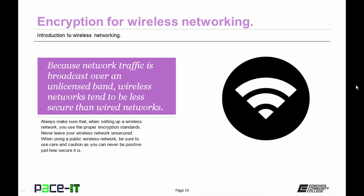Because wireless network traffic is broadcast over an unlicensed band, wireless networks tend to be less secure than wired networks. Always make sure when setting up a wireless network that you use the proper encryption standards. Never leave your wireless network unsecured. Also, when using a public wireless network, be sure to use care and caution — you can never be positive just how secure it is. I would recommend never sending sensitive information over a public wireless network.